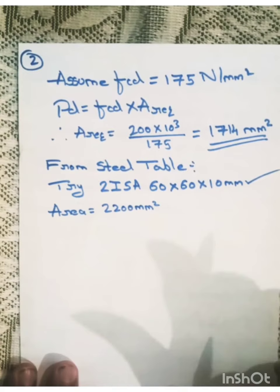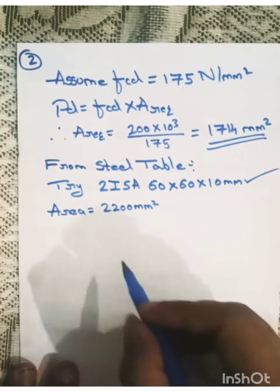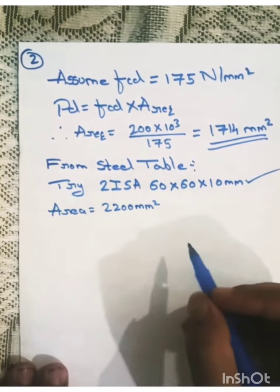So now, for this section, we have 2200 mm square. And for this section, again from steel table,